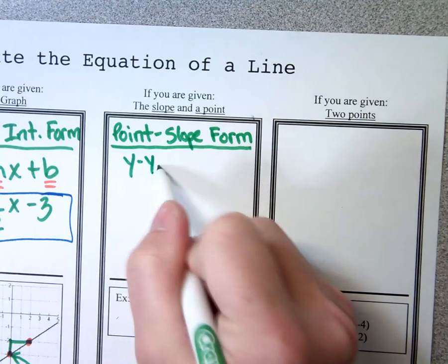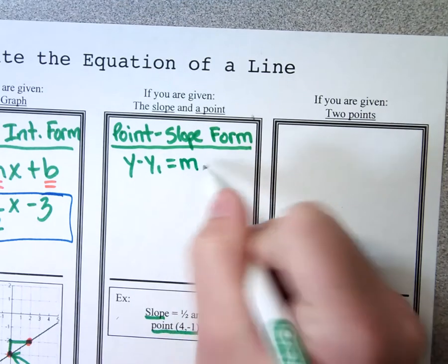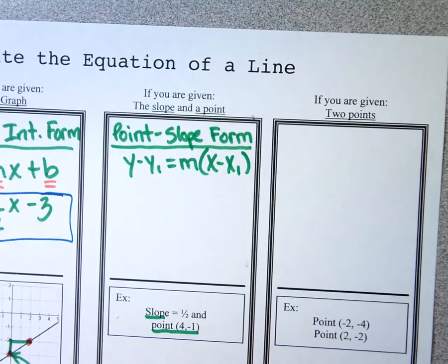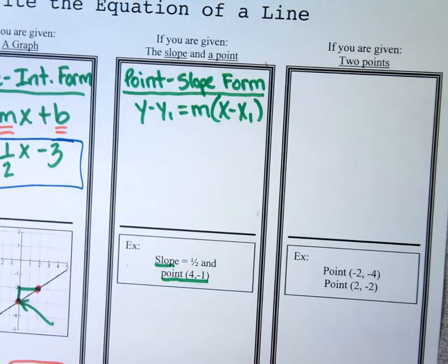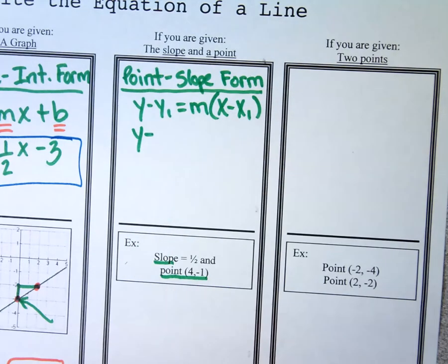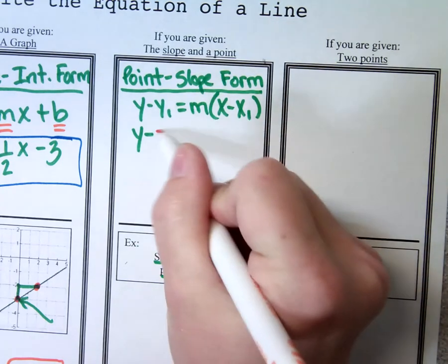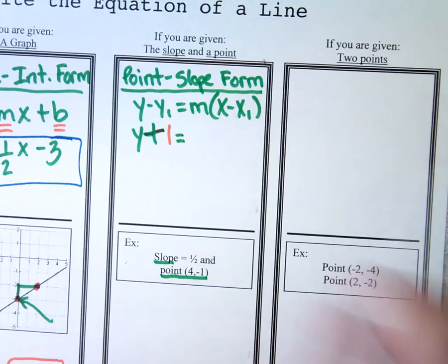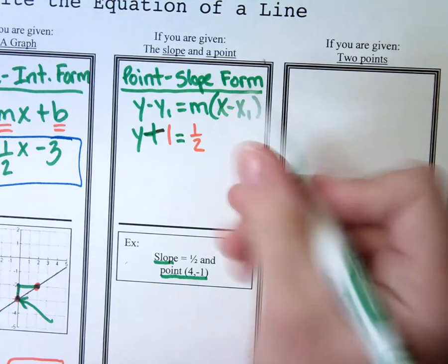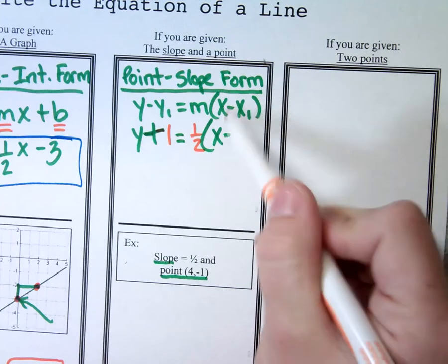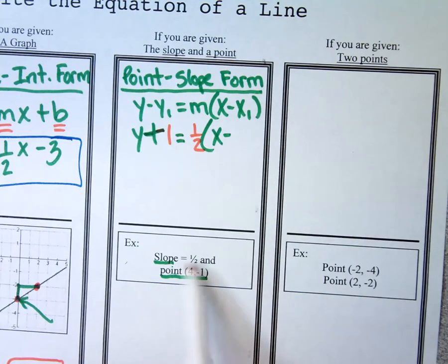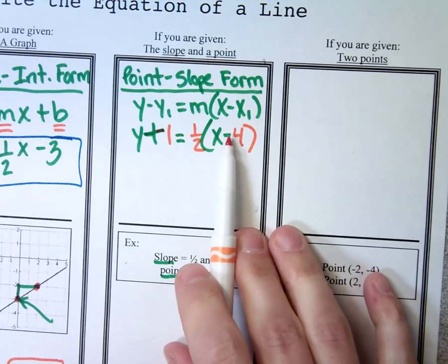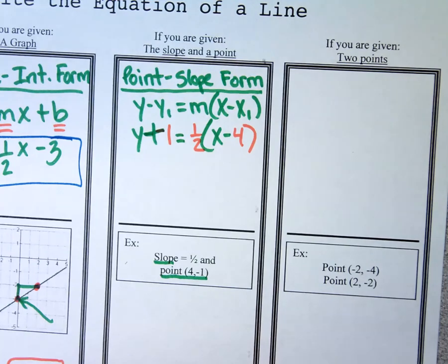Point-slope form looks like this: y minus y1 equals m, parentheses, x minus x1. I start plugging in what I know. It starts with y minus — the y1 is the y-coordinate, which is negative one. A minus a negative back-to-back makes a big plus. I bring down equals. The slope is one half, so I put one half where the m is. In parentheses, it's x minus the x-coordinate, which is 4. This stays a minus because I didn't subtract a negative. This is point-slope form.